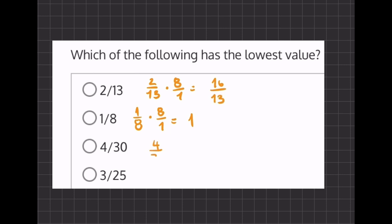Let's do the same for 4/30. If we multiply by 8, we get 32/30.